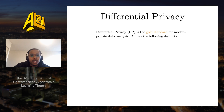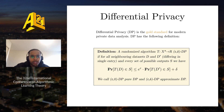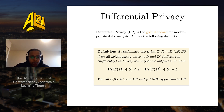Differential privacy is considered to be the gold standard for modern private data analysis. A randomized algorithm T is ε-δ differentially private if for all neighboring datasets D and D' that differ in a single entry and every set of possible outputs S, the output of T given D and the output of T given D' are comparable in the stated sense. We call ε-0 differential privacy pure differential privacy, and ε-δ differential privacy approximate differential privacy.